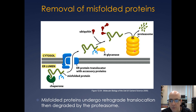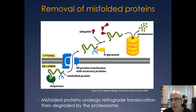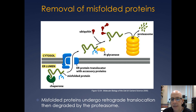If a protein doesn't fold properly, it's transported out of the ER in a process called retrograde translocation. A chaperone binds the misfolded protein and helps it translocate out of the ER, glycosylation is removed, ubiquitin is added to the protein, and that's recognized by the proteasome. The amino acids are then recycled. So misfolded ER proteins are almost always translocated out, deglycosylated, ubiquitylated, and degraded by the proteasome.